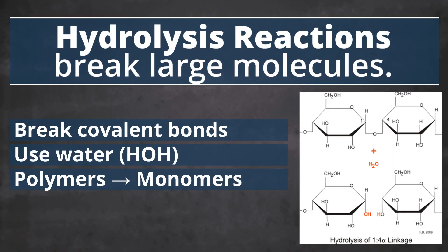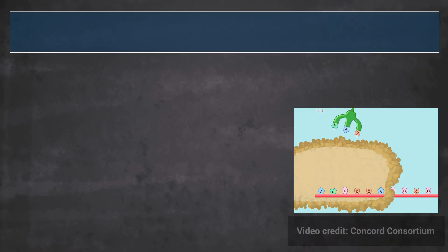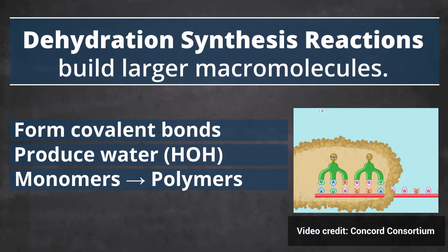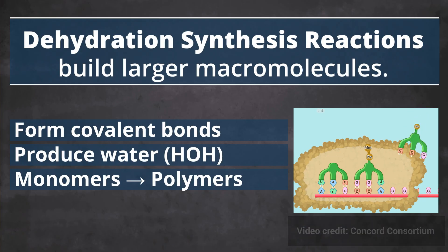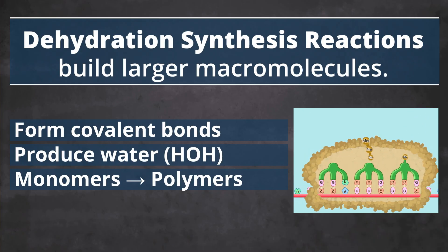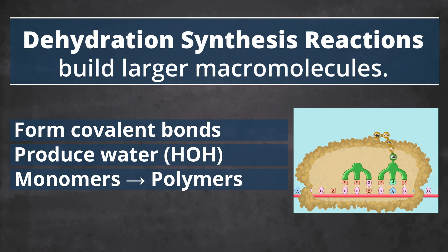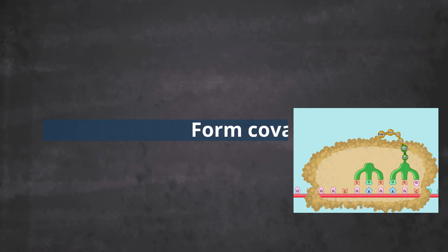Hydrolysis reactions use water to break large polymer molecules into smaller molecules called monomers. Dehydration synthesis reactions build new macromolecules — polymers like starch, proteins, or DNA — by linking smaller building blocks called monomers into long chains or branched structures. Dehydration synthesis reactions form water as a byproduct of the polymerization process.